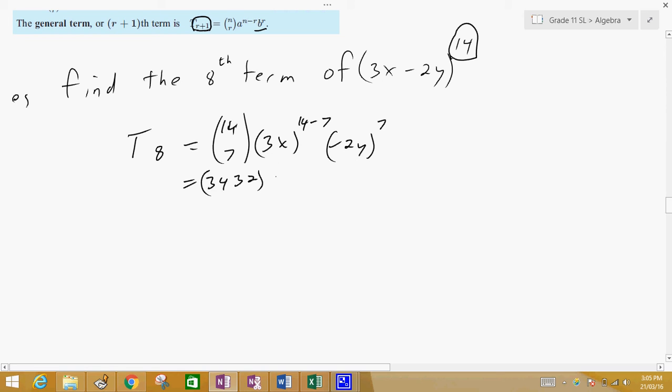So, that's times 3 to the power of 7, times x to the power of 7, and then negative 2 to the power of 7, and y to the power of 7. So, we're going to have to figure out what 3,432 times 3 to the power of 7 times negative 2 to the power of 7 equals.